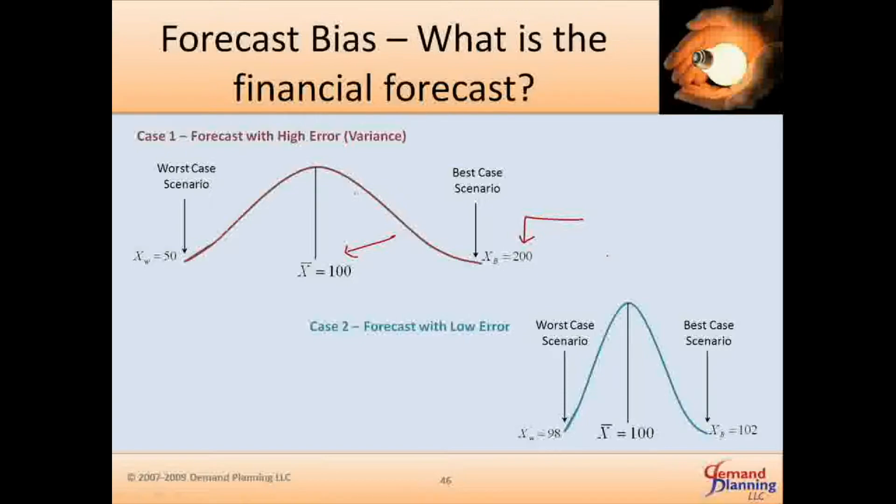So the demand planner is very confident that this scenario, this type of a chart is a reality. It's realistic. Average is $100 million, best case is $200 million. But things could turn out to be bad. Economy could sour, and then your demand planner estimates that worst case we could only end up selling $50 million.